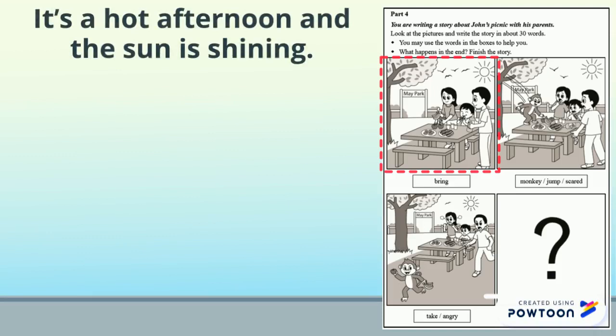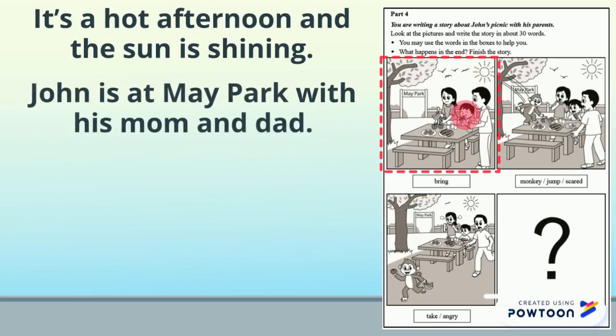What kind of day is it and what can you see? It's a hot afternoon and the sun is shining. Who can we see in this picture and where are they? John is at May Park with his mom and dad.